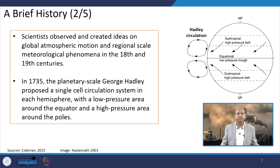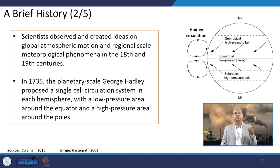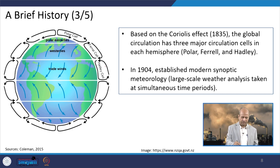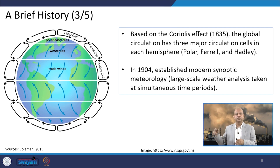In the 18th and 19th centuries, scientists created ideas on global atmospheric motion and regional-scale meteorological phenomena. In 1735, a planetary-scale single-cell circulation system was proposed by scientist George Hadley — known as the Hadley single-cell model. In this model, air at the equator rises because it is warm and less dense, travels towards the pole, descends there, and comes back — a single-cell circulation.